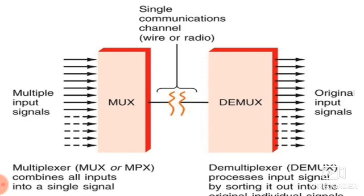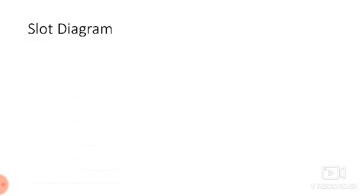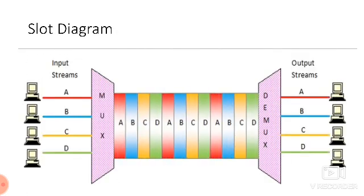This time slot diagram has four inputs at the input side. These four inputs are divided into different time slots: A, B, C, D — then repeated A, B, C, D. Each transmitter transmits its signal and waits until its next turn. Once A transmits, it waits for B, C, D to use their respective slots; after D, A gets its turn again. All input signals use the whole channel in separate slots.